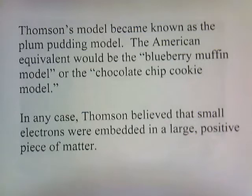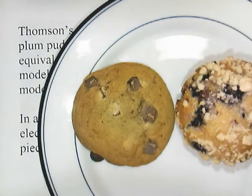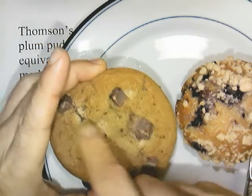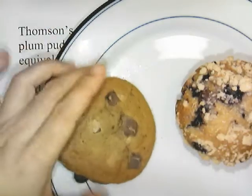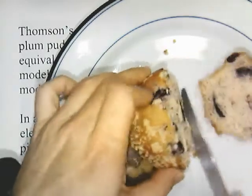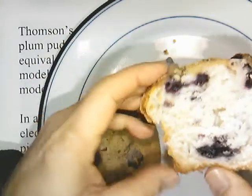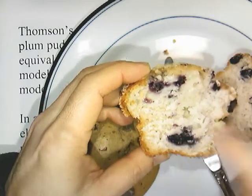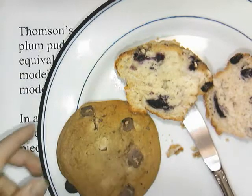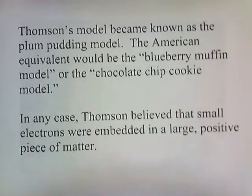The American equivalent would be the blueberry muffin model or the chocolate chip cookie model. So the Thompson model is that you've got these electrons embedded in a large, positive region — like these blueberries here embedded inside a region that's supposed to be positive. Thompson believed that small electrons were embedded in a large, positive piece of matter.